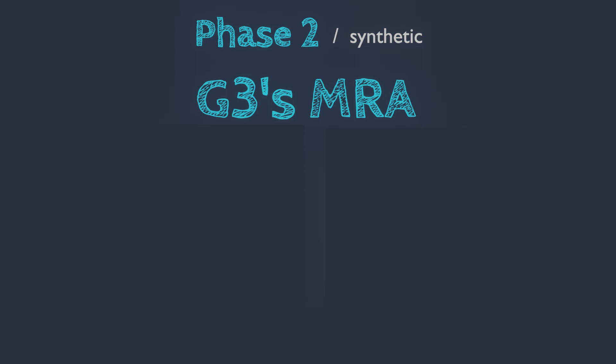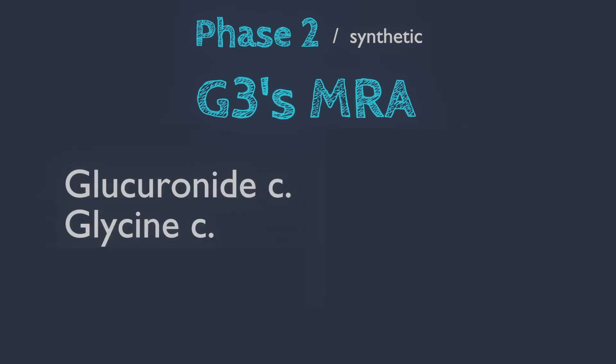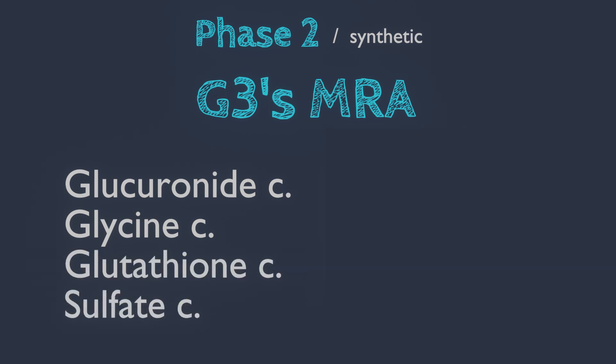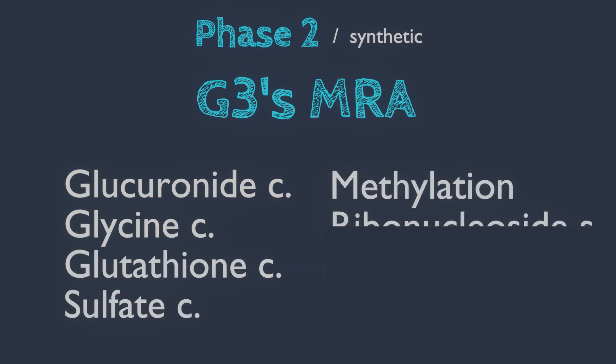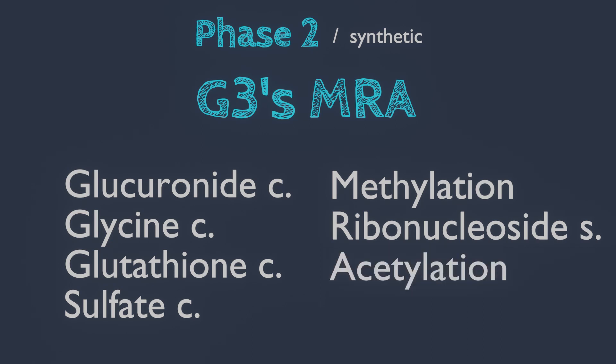Phase 2 reaction includes G3's MRA, which is a mnemonic for glucuronate conjugation, lysine conjugation, glutathione conjugation, sulfate conjugation and methylation, ribonucleoside synthesis, and acetylation.